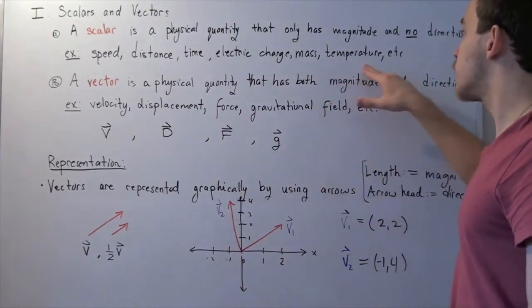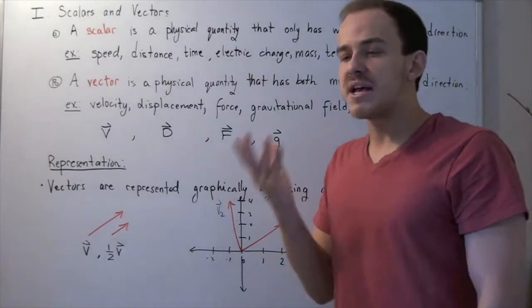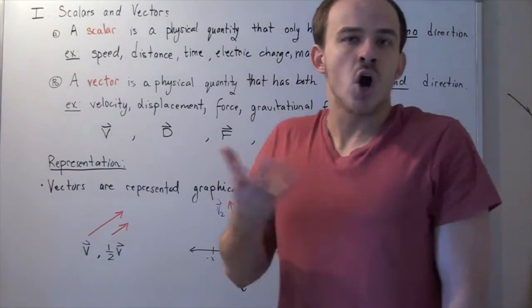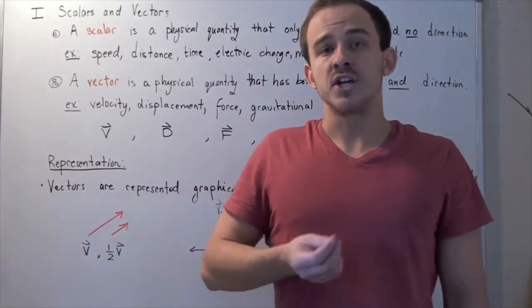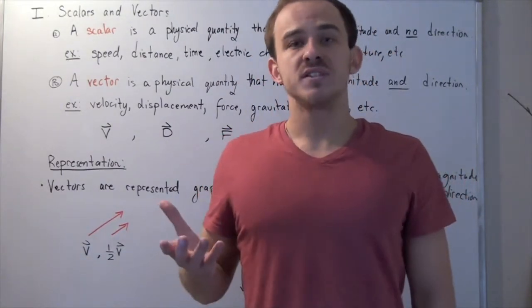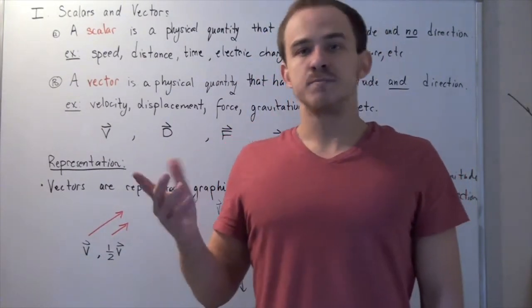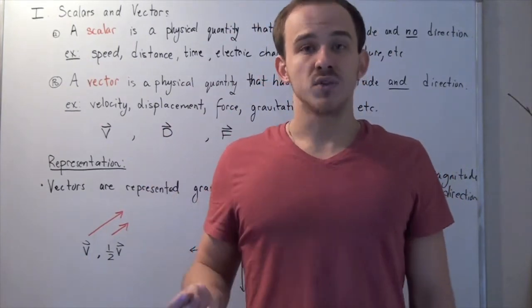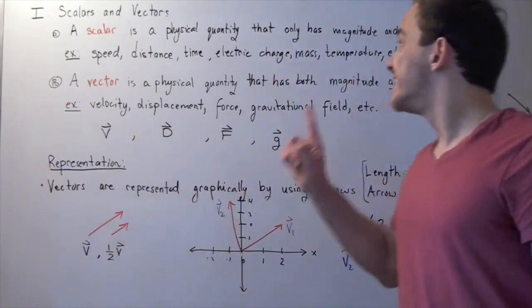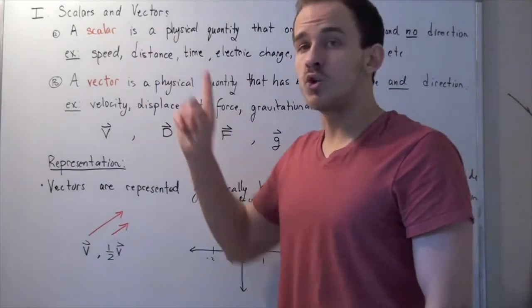In other words, let's take temperature for example. Whenever you specify the temperature of the car, say it's 80 Fahrenheit, you never specify a direction, right? It makes no sense to say it's 80 degrees pointing upward or 80 degrees pointing sideways or downward. That makes no sense. And that's because temperature is a scalar quantity.